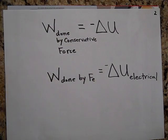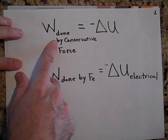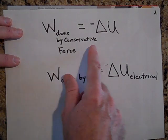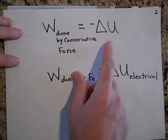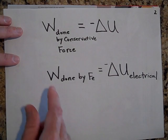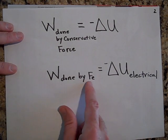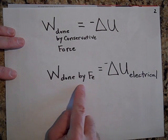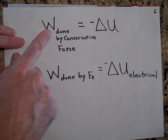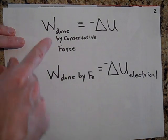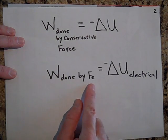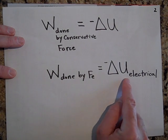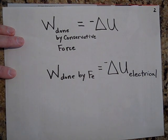So how do you calculate that? You calculate it with this equation: the work done by a conservative force will always equal the negative change in potential energy. The conservative force in this case is the electric force. So the work done by the electric force equals the negative change in electric potential energy.